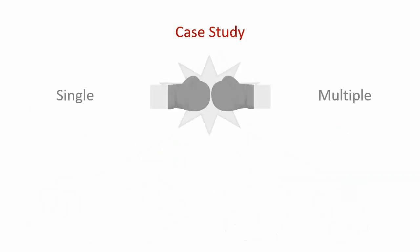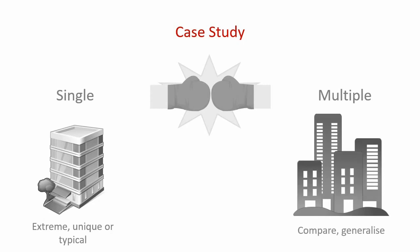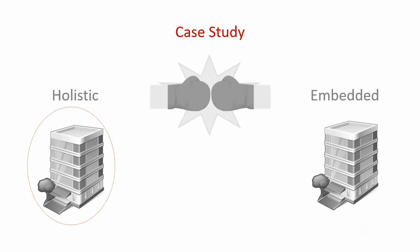When designing a case study you need to choose between a single or a multiple case study, and this decision is driven by your research problem. Single case studies are great for extreme, unique, or typical cases. A multiple case study is great for generalization because you can check if findings in one case are the same as findings in other cases. You also need to decide between a holistic case study — where you look at the case in its entirety — and an embedded case study, where you have multiple units of analysis that you are investigating.